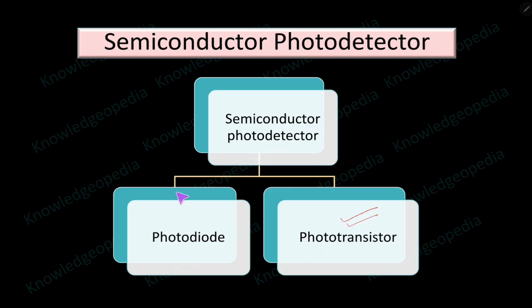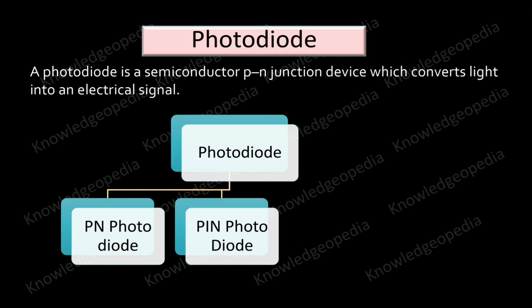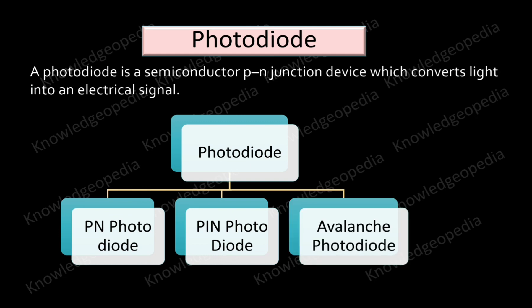Semiconductor photo detectors are of two types: one is the photo diode, and the second group comes under photo transistors. According to the syllabus, we will be concentrating on photo diodes. A photo diode is a semiconductor p-n junction device which converts light into electrical signal. Photo diodes are broadly classified into three types: p-n photo diode, PIN photo diode, and avalanche photo diode. We will discuss these one by one, and also discuss solar cells, which are special types of photo detectors.